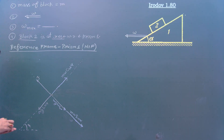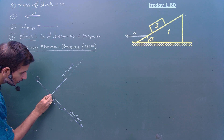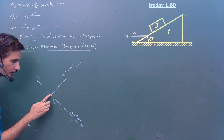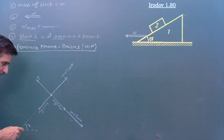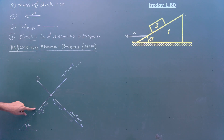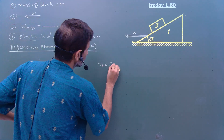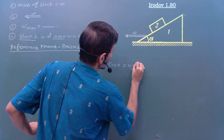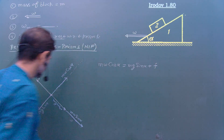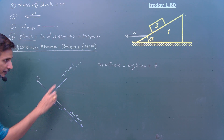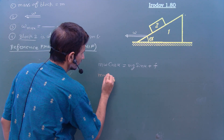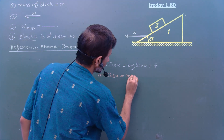Now we determine the direction of friction. If the component mw cos alpha is greater than mg sin alpha, the block tends to move up the plane, so friction acts downward along the plane. The equilibrium equation becomes: mw cos alpha = mg sin alpha + friction force f. If instead mg sin alpha is greater, the block tends to move down the plane, and friction acts upward: mw cos alpha = mg sin alpha minus friction force.